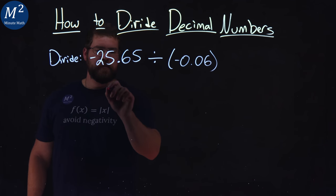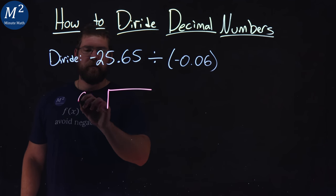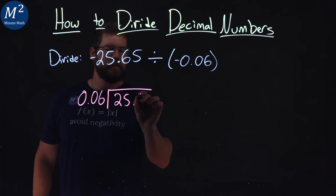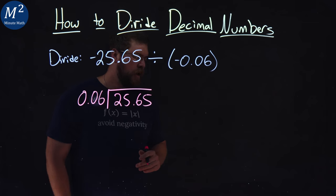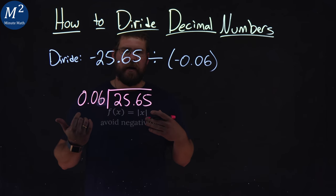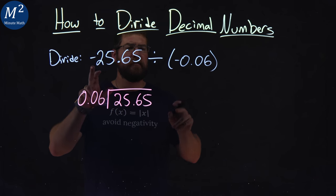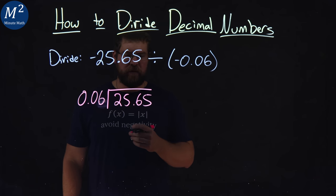Let's first write this with long division. I have a 0.06 here, and I have a 25.65. I'm going to keep off the negative signs right now. We'll deal with that later, but we know our answer is going to be positive. Negative divided by a negative number is a positive number.